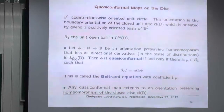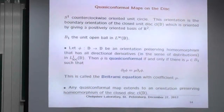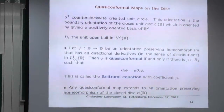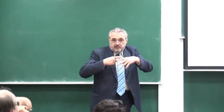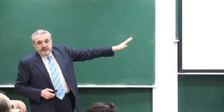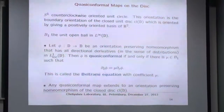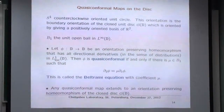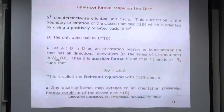Quasi-conformal maps on the disk: I orient S¹ counterclockwise and take B¹, the open unit ball in L∞(D). An orientation-preserving homeomorphism φ with all directional derivatives in L¹_loc is quasi-conformal if and only if there exists a μ in B¹ such that the Beltrami equation ∂_{z̄}φ = μ · ∂_z φ holds. This is actually a big theorem equating the analytic definition with the geometric definition involving ratios of ellipses. For me, quasi-conformal will always mean this Beltrami equation. Any quasi-conformal map extends to an orientation-preserving homeomorphism of the closed disk.